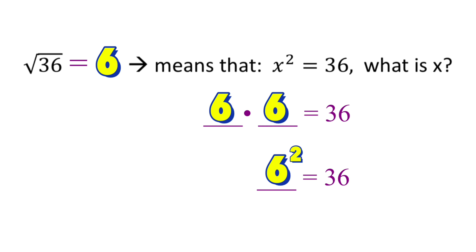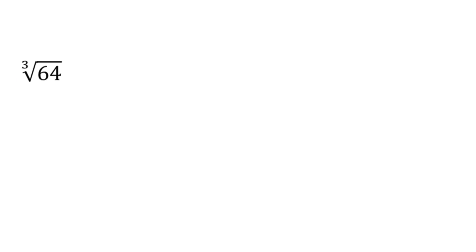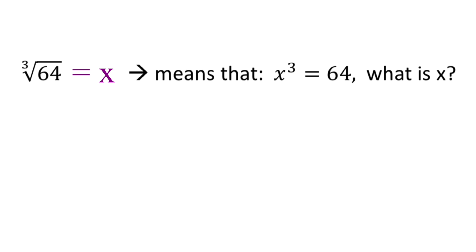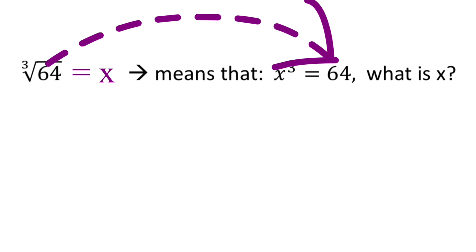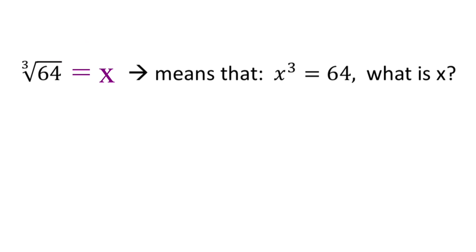Now let's look at the next example — the cube root of 64. To evaluate this, we equal it to x, then change it to exponential form: x to the power 3 equals 64. Notice that x becomes the base, our index of 3 becomes the exponent, and the radicand 64 becomes the answer. We need to find a number such that when we multiply it three times by itself — blank times blank times blank — it equals 64.